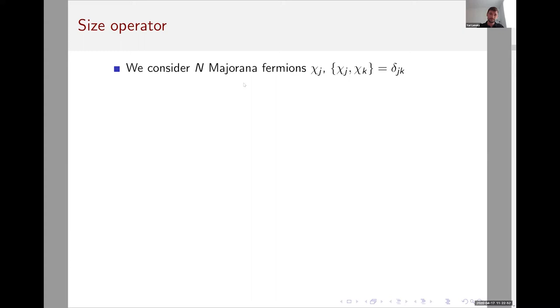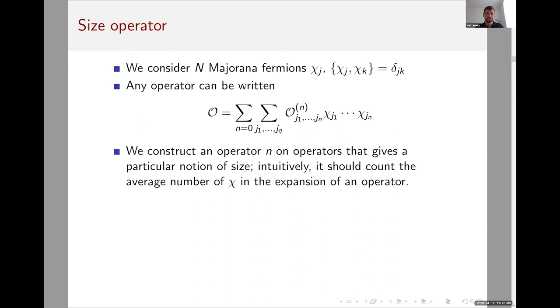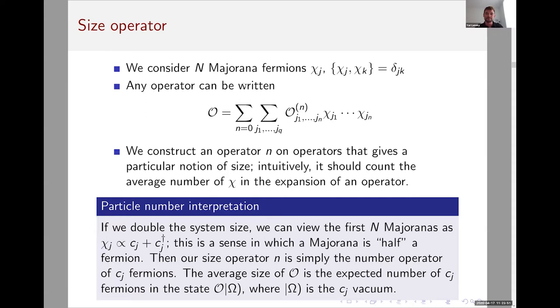Now I'm going to define concretely which size operator we're going to use. We'll always be working in some system with N Majorana fermions. To repeat, this means that any operator can be written as an expansion in terms of Majorana fermions this way. Our goal is to construct an operator on the space of operators that tells us the size. Somehow it should count the number of Majorana fermions that are in the expansion of this operator on average. That's a little bit tricky because you've got these O^{(n)}_{j_1...j_n} coefficients which in principle have phases.